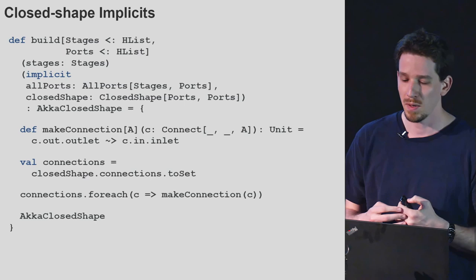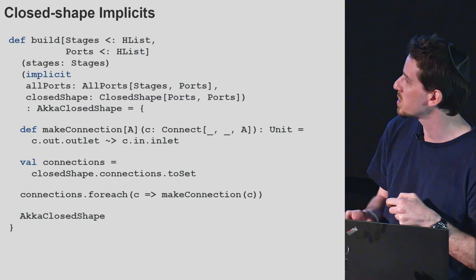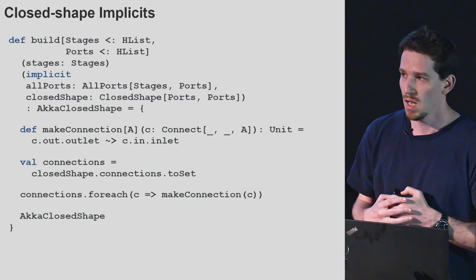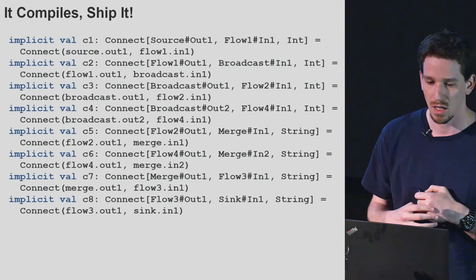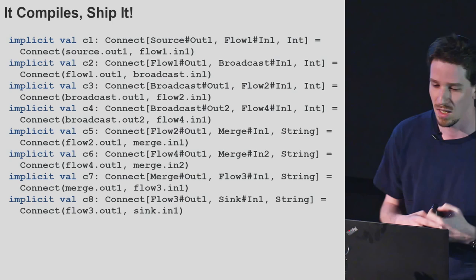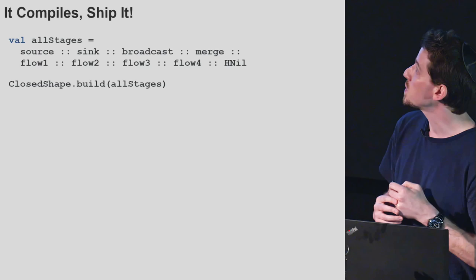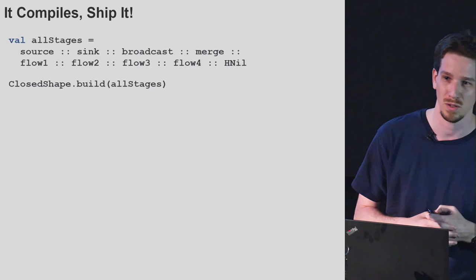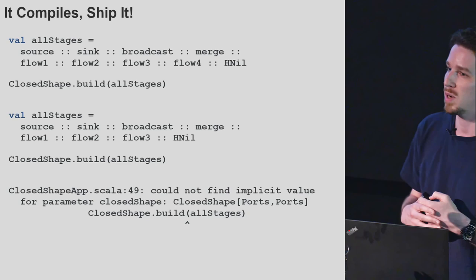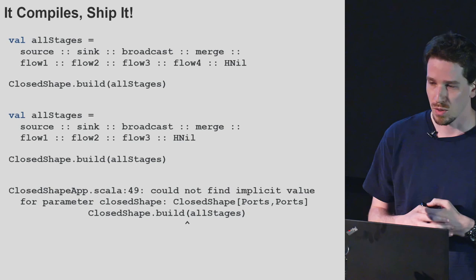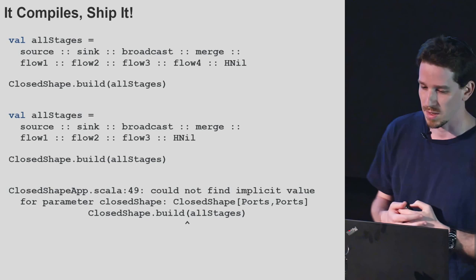We converted our compile-time proof into a compile-time value — this assertion plus the actual connections we make using the connections list. We define some stages and connections saying what's connected to what. We gather the whole list of stages and compile it — and it compiles. But if we omit something, like the flow for part, it fails at compile time saying the list is not closed. This is exactly what we wanted — we managed to regain type safety using a Prolog analogy with implicits.